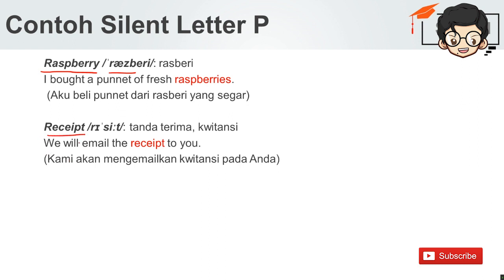Lalu, 'receipt' — tanda terima, kuitansi. We will email the receipt to you. Kami akan meng-emailkan kuitansi pada Anda. Itu tadi adalah silent letter P. Semoga ini bisa membantu kalian. Apabila kalian punya masukan atau rekomendasi konten, silahkan tulis di kolom komentar. And don't forget to share this video to your friends — let them study with us. Hopefully you can repeat this over and over again to pronounce a particular sentence, a letter, and a silent letter in a particular word too. Several words require several ways to pronounce. Kita akan ketemu lagi di video yang lain, everyone. See you by then.